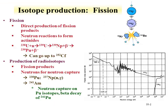One primary route for isotope production is through the fission process. There are two main methods: direct production of fission products, where fissioning of uranium-235 itself creates the isotopes of interest, and formation of new isotopes through neutron reactions. For example, plutonium isotopes are produced through successive neutron capture — uranium-238 captures a neutron to form uranium-239, which beta decays to neptunium-239, which beta decays to plutonium-239.